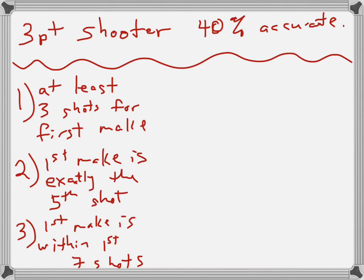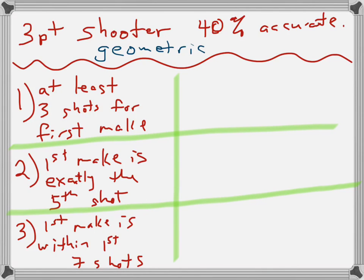And let's say that the first make is within your first seven shots. All right, pause your video and answer these questions. Okay, assuming that you've paused your video. It's important that we say, for all these problems somewhere, that this is a geometric distribution with the probability of success equaling 0.4.